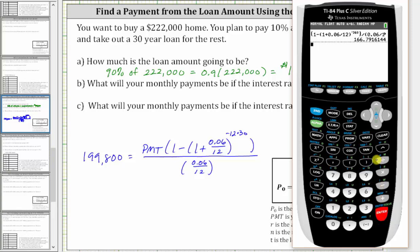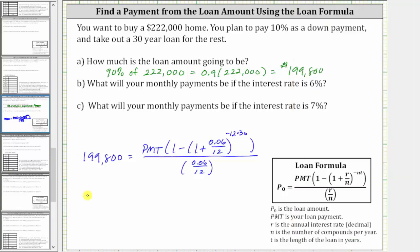Which means on the right side of the equation, we have PMT times approximately 166.7916144. Let's go ahead and write this down. The equation is now 199,800 equals PMT times 166.7916144. And now to solve for PMT, the loan payment, we divide both sides of the equation by 166.7916144.